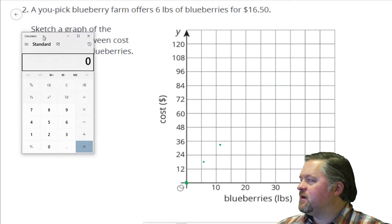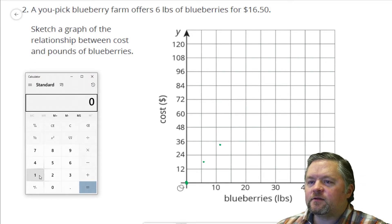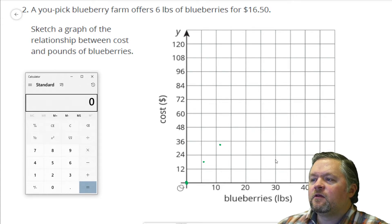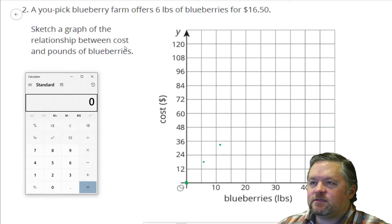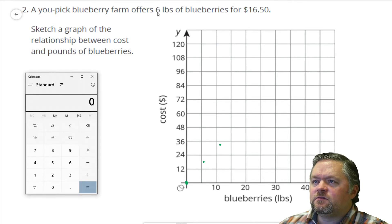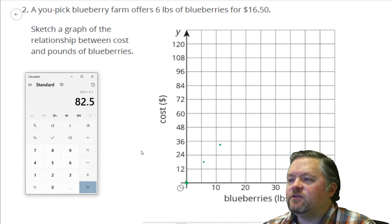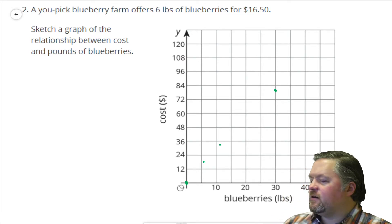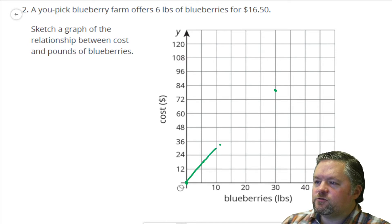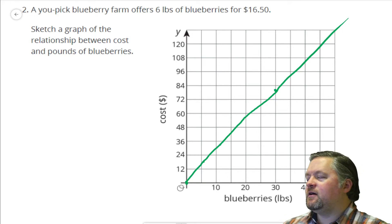What about a nice number? What if we bought 30 pounds of blueberries? That would be nice on this axis. 30 pounds. Well, six times five is 30. 16.5 times five is 82 and a half. So 30 pounds of blueberries, $82.50. That's going to be somewhere around here. You should use a ruler for this. Beautiful graph.